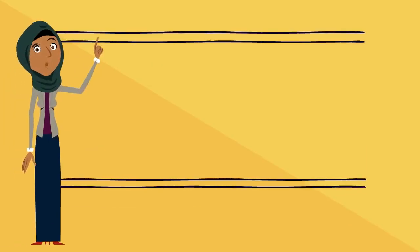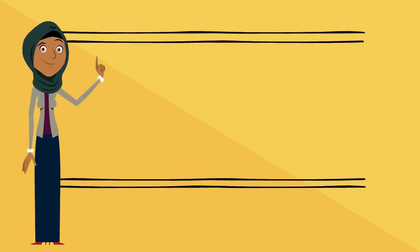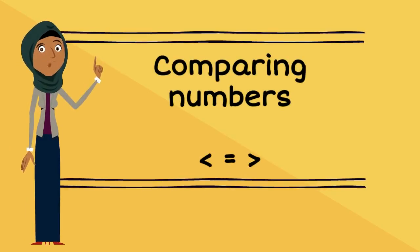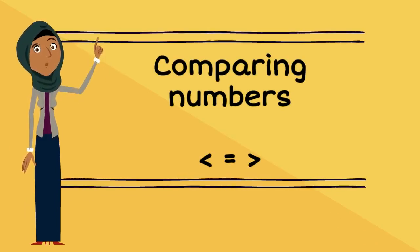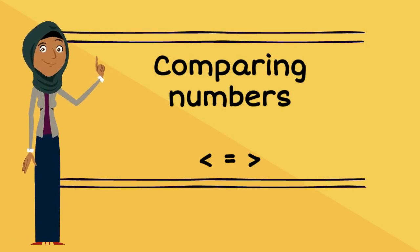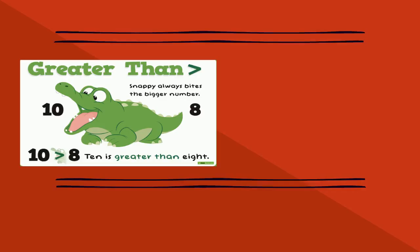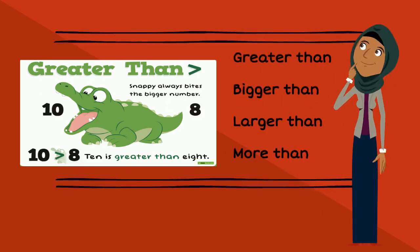The first thing that we do when we want to order numbers is to compare the numbers. I'm sure that you're all familiar with these symbols. This symbol is greater than.